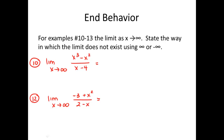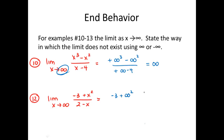Last two examples: the limit technically doesn't exist because these are both top-heavy — they go off to infinity. But we need to determine whether it's positive or negative infinity by substituting a positive and a negative number. For the first: as x approaches positive infinity, I get positive infinity cubed minus positive infinity squared over infinity minus 4 — both positive, so positive infinity. For the second: the numerator gives a positive value, but the denominator is 2 minus infinity, which is negative — so positive over negative gives negative infinity.